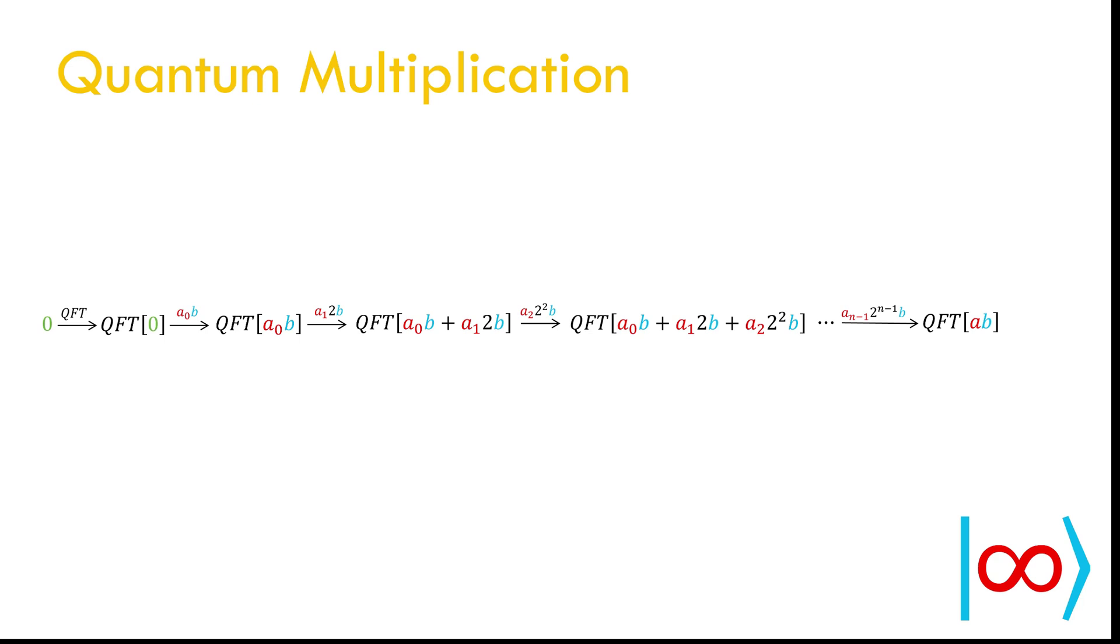Eventually, we have quantum Fourier transform of the product a times b. Then, we apply inverse quantum Fourier transform to obtain the desired product.